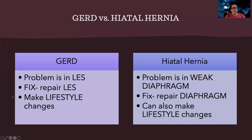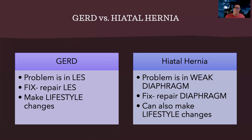Now let's talk about GERD versus hiatal hernia. This is one where if you're given symptoms, they look exactly the same. The only difference is that with GERD, the problem is in the lower esophageal sphincter, or LES, whereas with hiatal hernia, the problem is a weak diaphragm. So the fix for GERD is to repair the LES or change lifestyle and diet. The fix for hiatal hernia is to repair the diaphragm, and they can also make lifestyle changes. The only difference between these two is where the problem is located, and the fix addresses that location.